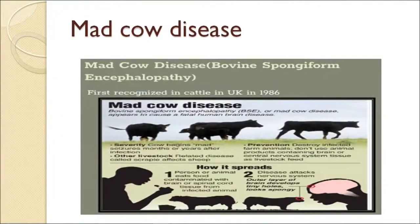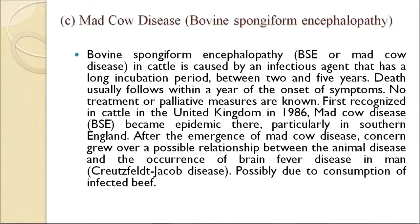The third disease is mad cow disease, or Bovine Spongiform Encephalopathy (BSE). In cattle, it is caused by an infectious agent with a long incubation period of between 2 and 5 years. Death usually follows within a year of the onset of symptoms. No treatment or palliative measures are known. First recognized in cattle in the United Kingdom in 1986, mad cow disease became epidemic there, particularly in southern England. After the emergence of mad cow disease, concern grew over a possible relationship between the animal disease and the occurrence of a brain disease in humans, possibly due to consumption of infected beef.